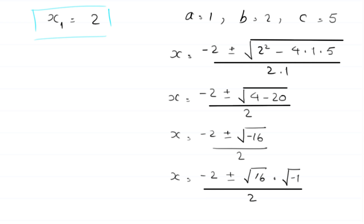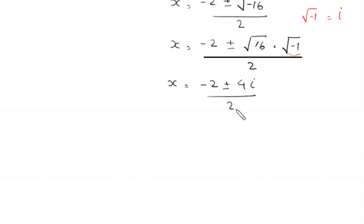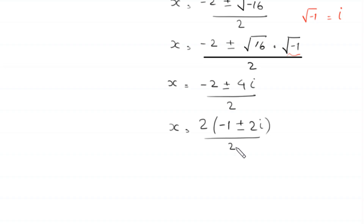So x is equal to negative 2 plus or minus, square root of 16 is 4, and this square root of negative 1 is equal to imaginary number i. From these two terms we can factor out 2 as a common factor, and in bracket left, negative 1 plus or minus 2i, divided by 2. This 2 will be cancelled out with this 2, and from here we get two values of x: x2 is equal to negative 1 plus 2i, and x3 is equal to negative 1 minus 2i.